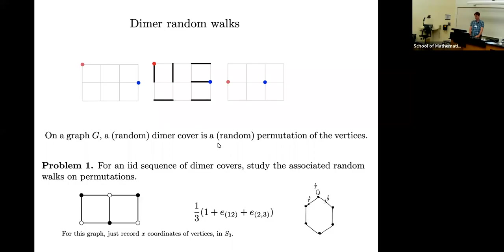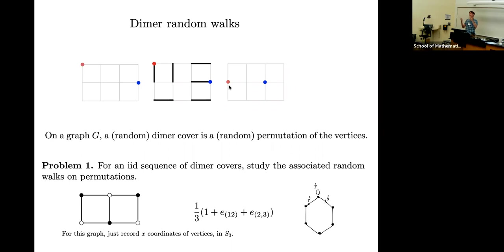Here's a red vertex and a blue vertex. When I pick a random diamond cover, the red guy will jump to his neighbor, and the blue guy will jump to his neighbor, and then I get this new configuration. You can keep track of just some small number of vertices, or you can keep track of all 12 vertices. If you keep track of all 12 vertices, then it's a random walk on S12, the permutation group on 12 elements.